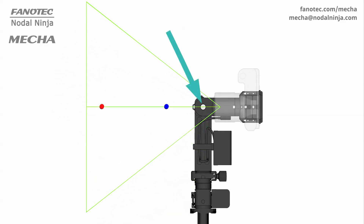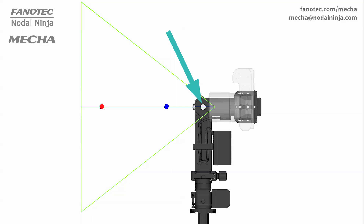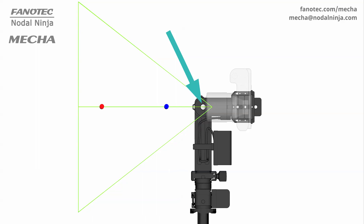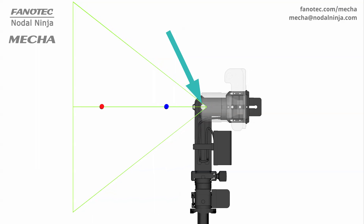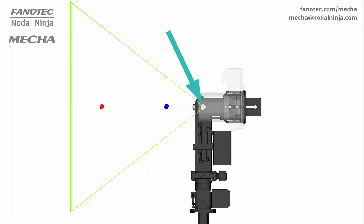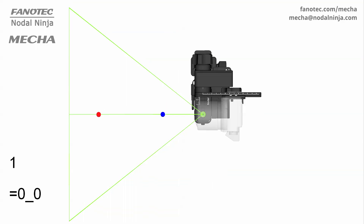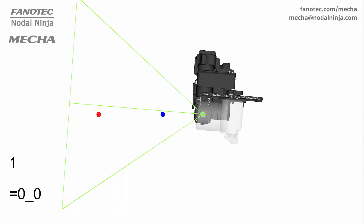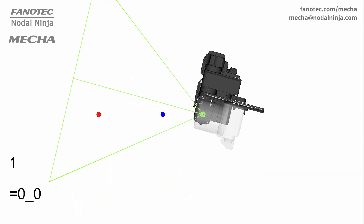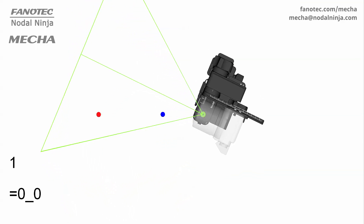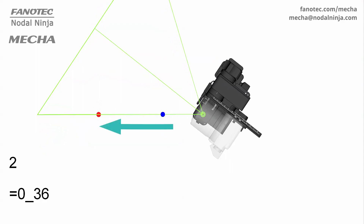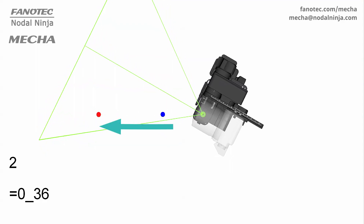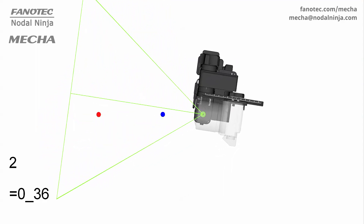Now let's slide the camera back to the correct position, so that it rotates around the No Parallax Point, and see a view from above. By panning the camera to the right or to the left, we can see a perfect centering or overlapping of the two objects, regardless of the angle of rotation.